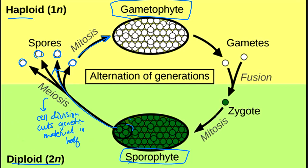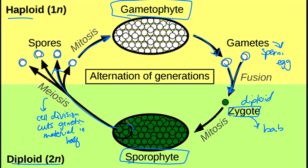The gametophyte produces gametes — sperm and egg — which are still haploid. When sperm and egg fuse, haploid plus haploid restores a diploid cell: the zygote, which is the first cell of the embryo. The zygote then divides by mitosis — one cell to two, two to four — developing into the sporophyte. We'll look at this alternation of generations life cycle for each of the four plant groups.